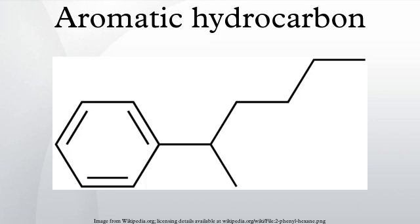An aromatic hydrocarbon, or arene, is a hydrocarbon with alternating double and single bonds between carbon atoms forming rings. The term aromatic was assigned before the physical mechanism determining aromaticity was discovered; it was coined simply because many of the compounds have a sweet or pleasant odor.